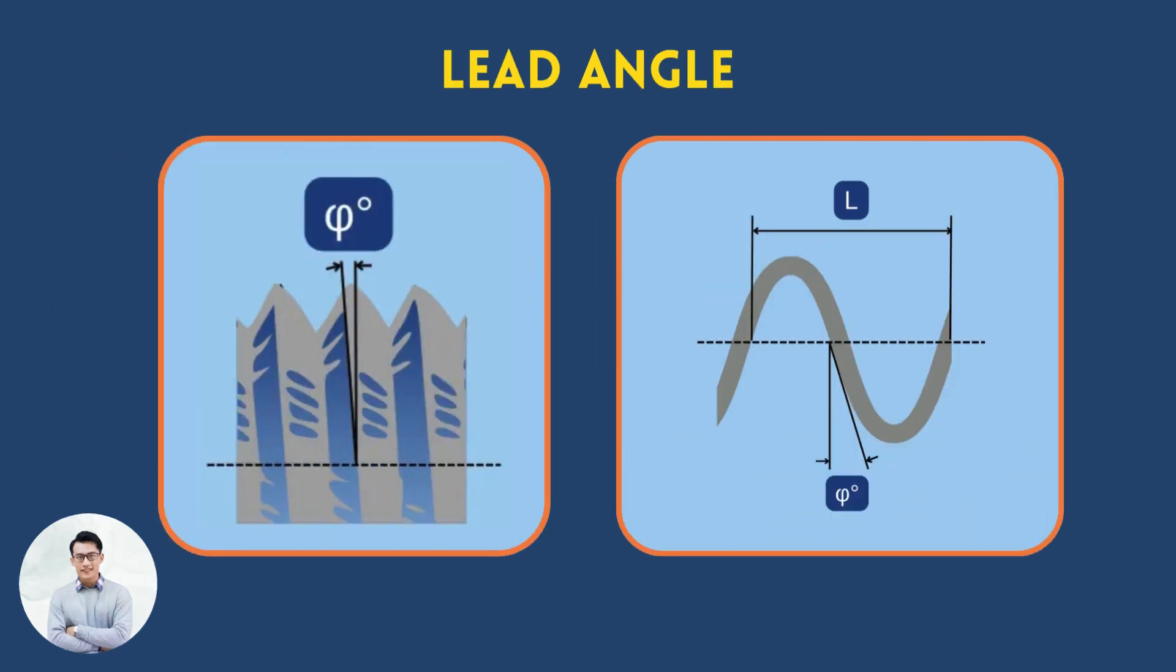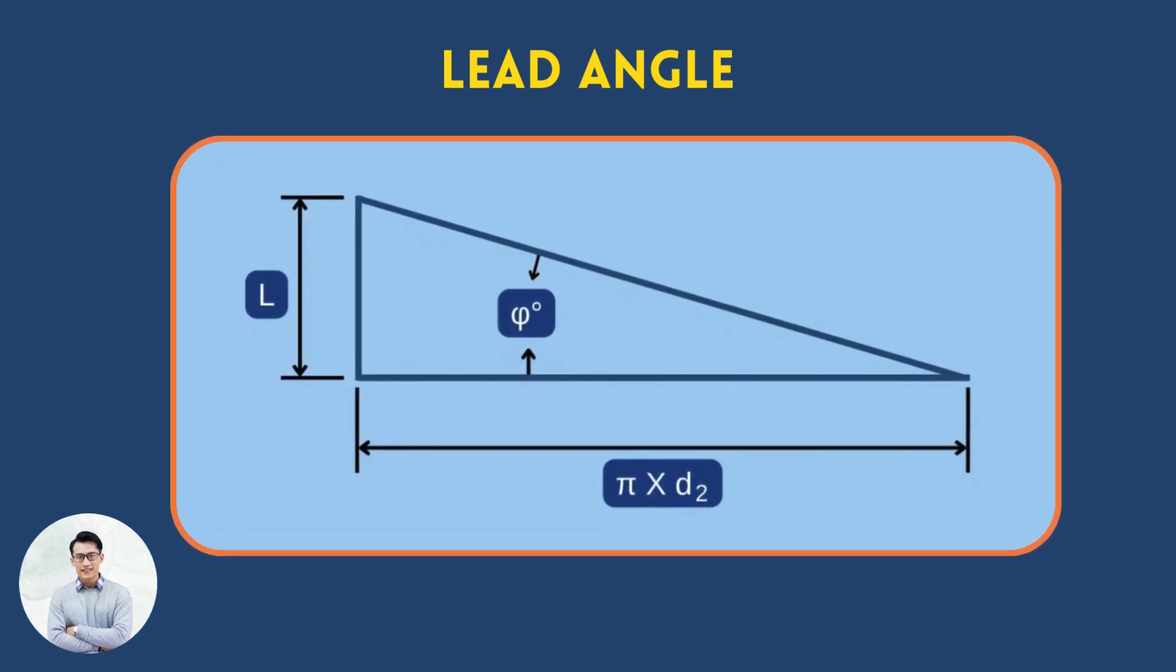The lead angle is the angle between the helix and a plane perpendicular to the screw's axis. Simply put, it is the proportion between the screw's lead and its diameter.